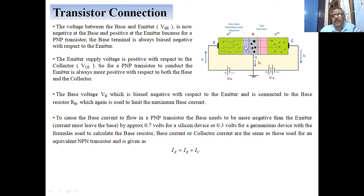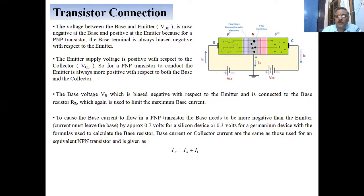Now, how is this transistor connected? The voltage between the base and the emitter is called the base-emitter voltage, written as VBE. This is negative at the base and positive at the emitter because the emitter-base junction is forward biased. Since it is P-type material, it is connected to the positive end of the battery, while the base is always negatively connected.